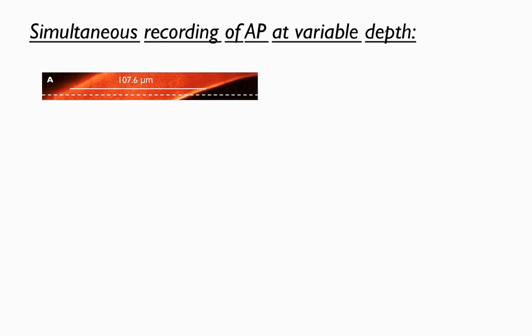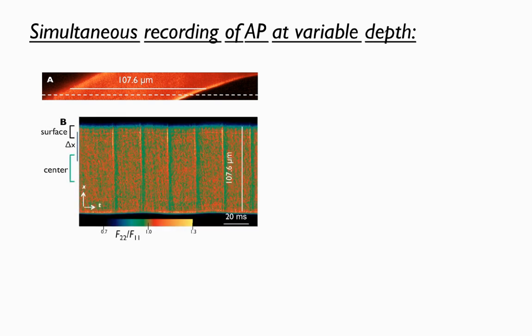In A, we show an X-Y image of the di-8-ANEPPS stained cell. In B, we can see the line scan of X-T. This image is obtained by repeatedly and rapidly imaging fluorescence along the dashed line in A. The two signals, F11 and F22, are obtained essentially simultaneously, and what is shown in B is already the ratio F22 over F11.